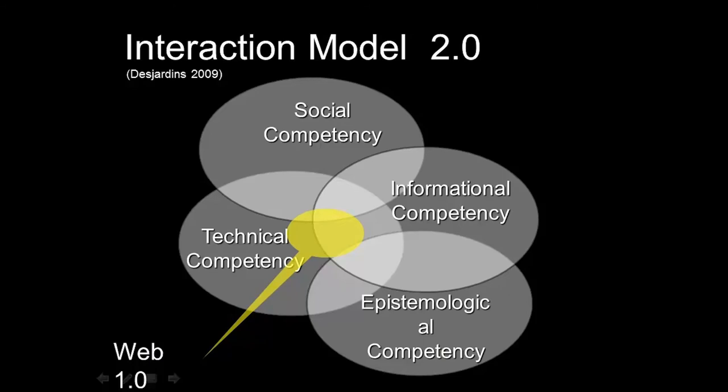Once you've found information of the type being sought, you would need to validate and evaluate it. The graphic on the screen illustrates the intersection of these two orders. Notice that social and epistemological competencies are not required, as there is no interaction with others implicit in Web 1.0, nor are there requirements to have the computer process and transform the data into another form other than what was found on the original web page accessed.